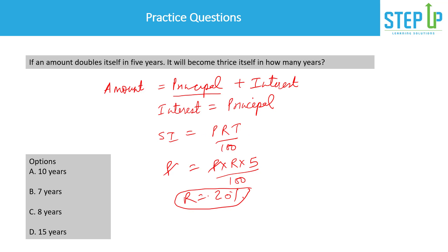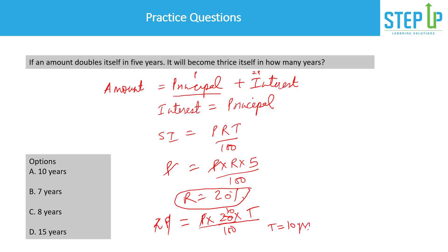Now the question asks: in how many years will it become thrice itself? If the amount becomes thrice, the interest earned would be 2P. Putting this into the formula: 2P = P × 20 × T / 100. The P's cancel, giving 2 × 100 = 20T, so T equals ten years.